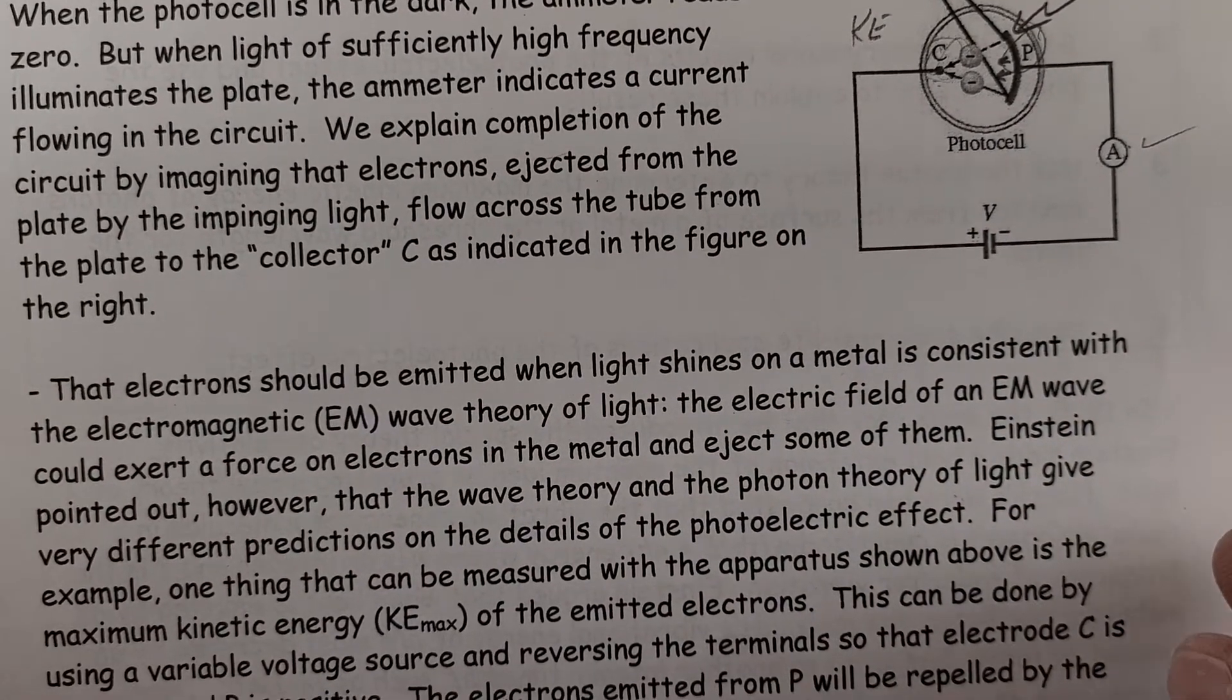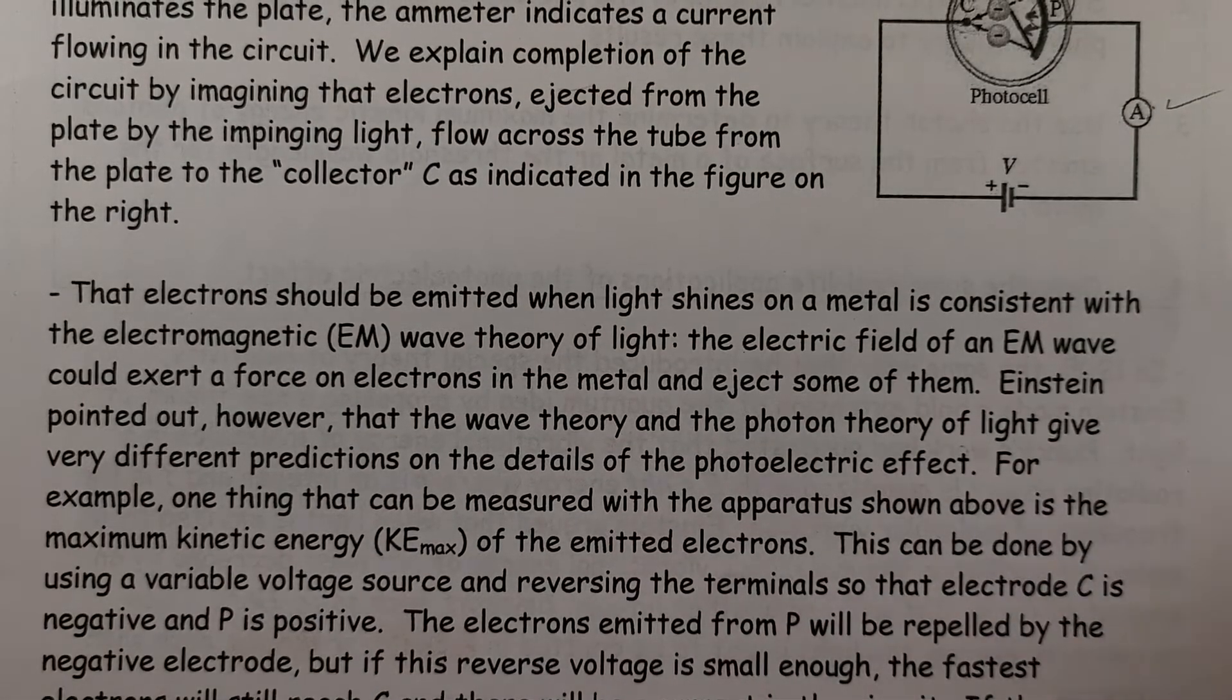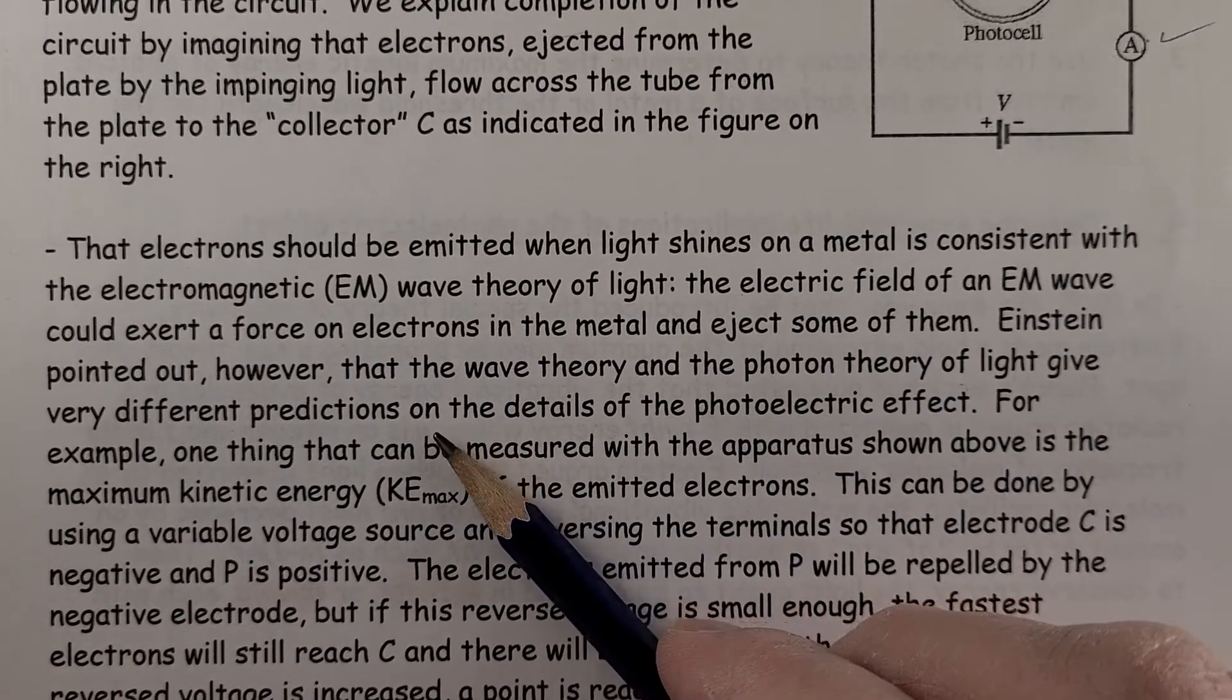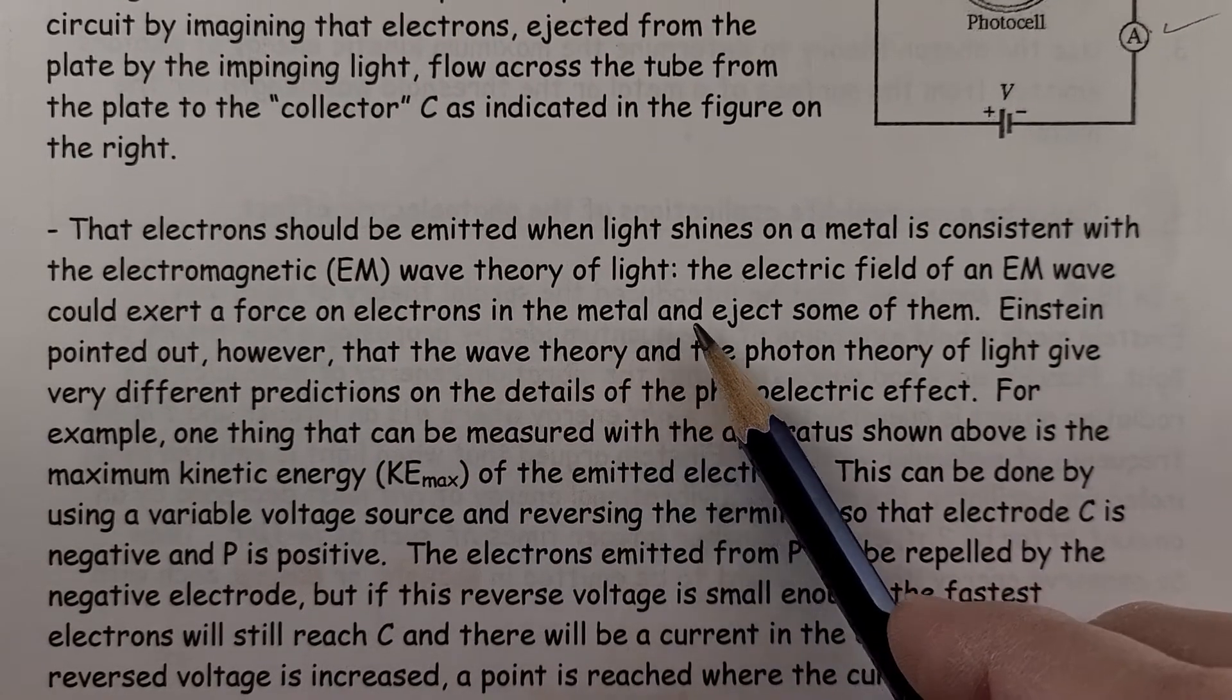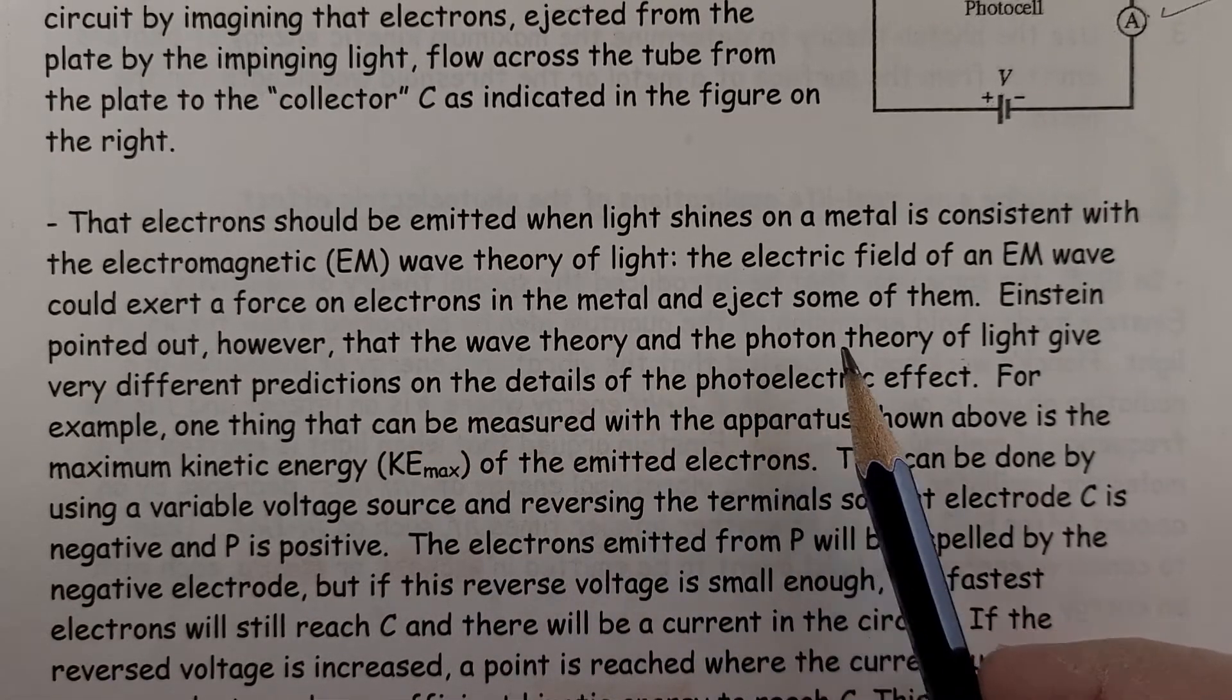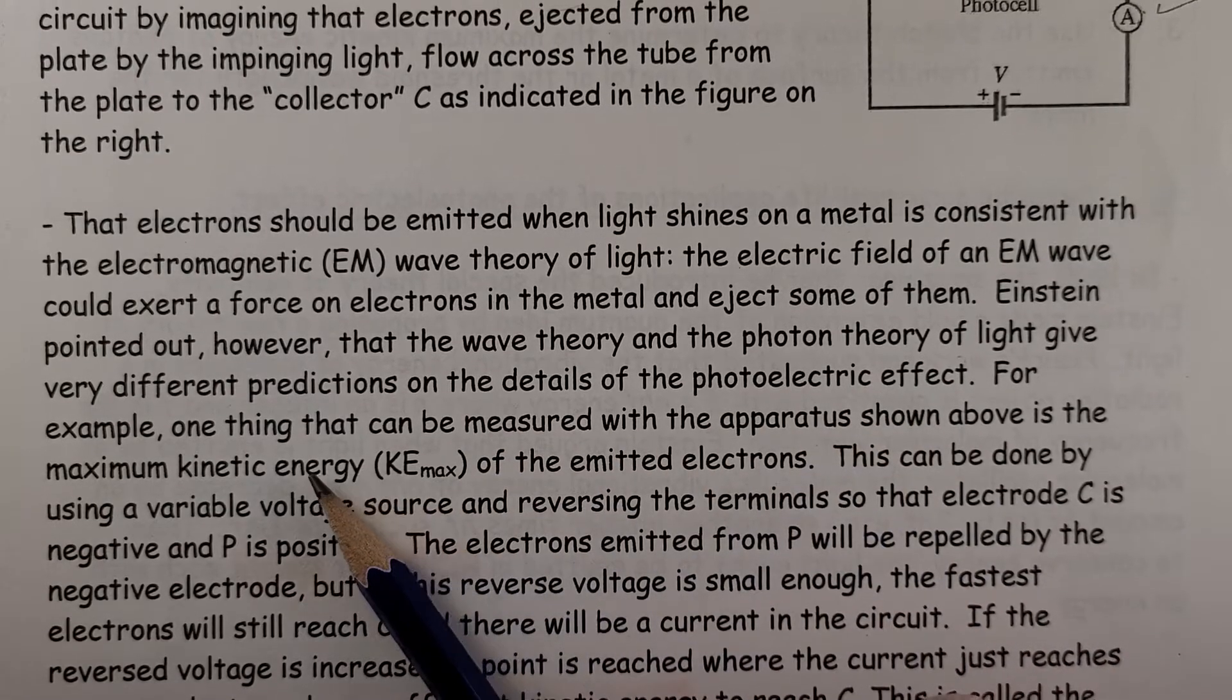Now, that electrons should be emitted when light shines on a metal is consistent with the electromagnetic wave theory of light. The electric field of an EM wave could exert a force on the electrons in the metal and eject some of them. Einstein pointed out, however, that the wave theory and photon theory of light give different predictions on the details of the photoelectric effect.